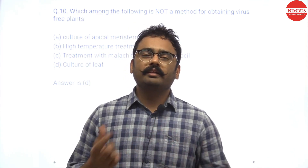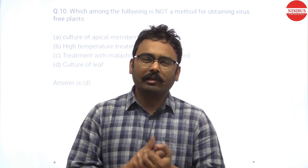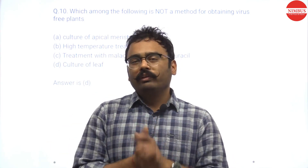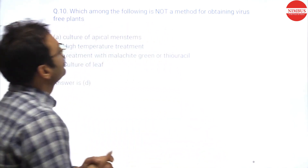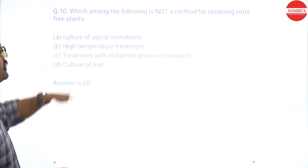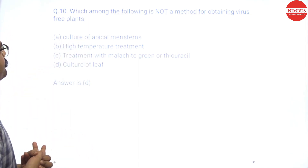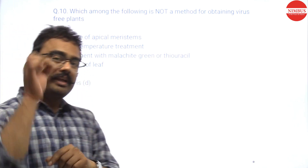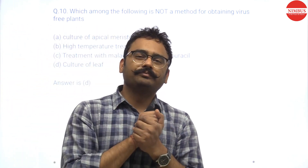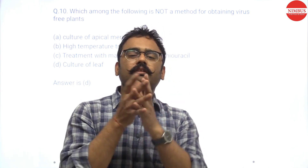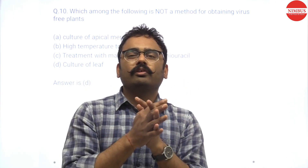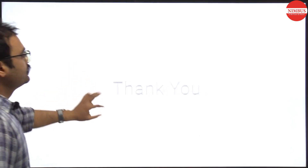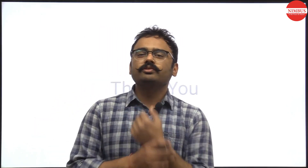If apical shoot or root meristematic tissue is taken and used in tissue culture, you get virus-free plants. The options are: culture of apical meristem — yes, this is a method; high temperature treatment — yes; treatment with malachite green or thiouracil — yes; culture of leaf — no, because you are not using the meristematic tissue of shoot or root. So culture of leaf is NOT a method. D is the answer. Thanks a lot! In the next video we will cover animal biotechnology, so stay tuned.